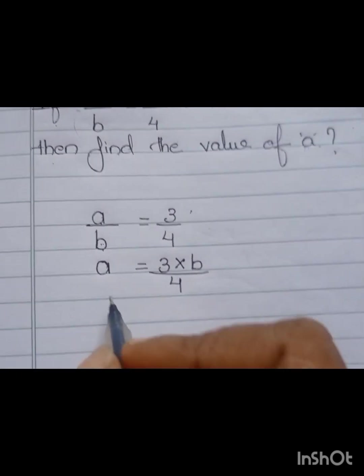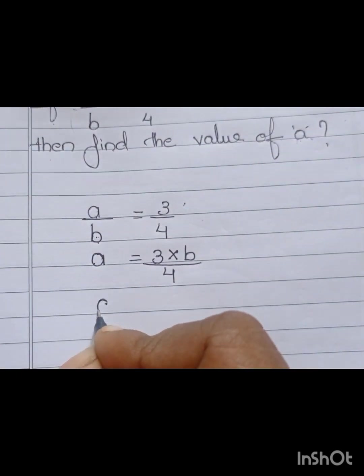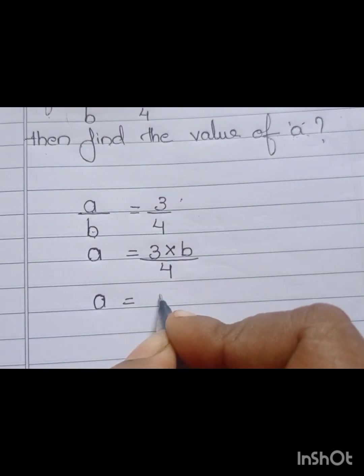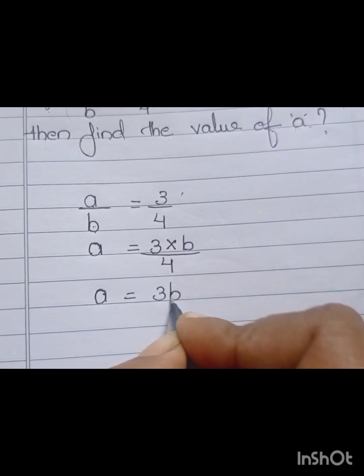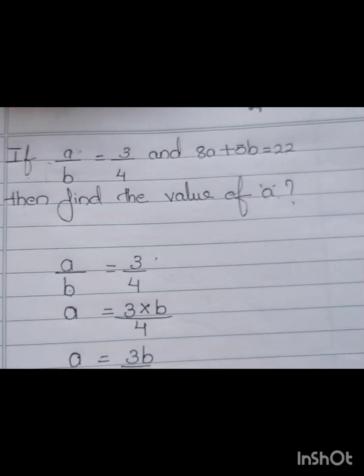We get A equal to 3B by 4. Here, we get 3 into B by 4. Next, 3B by 4. Both are same meaning: 3 into B by 4 or 3B by 4.